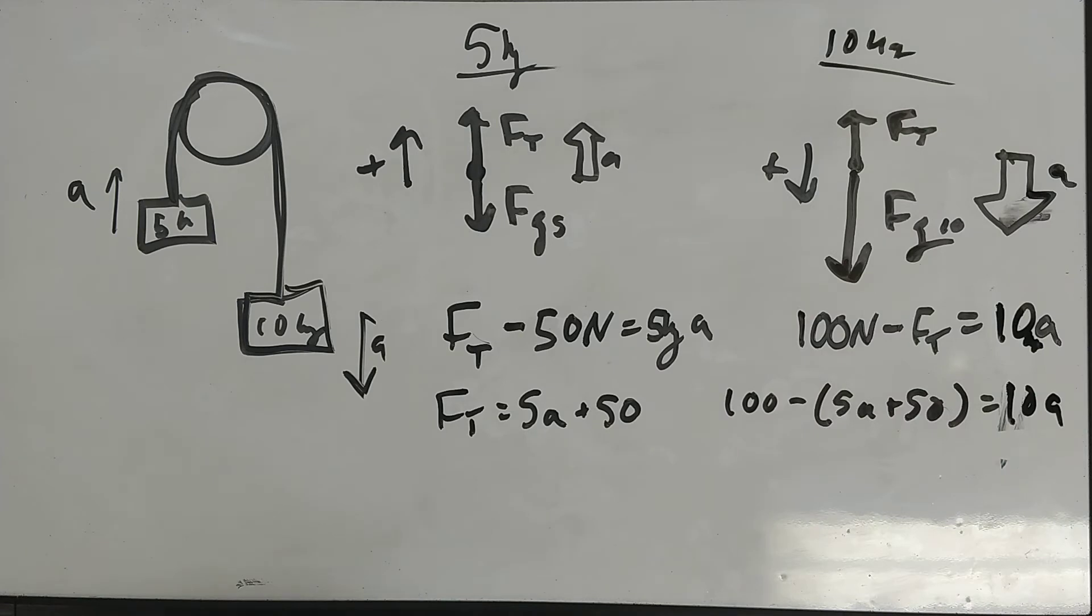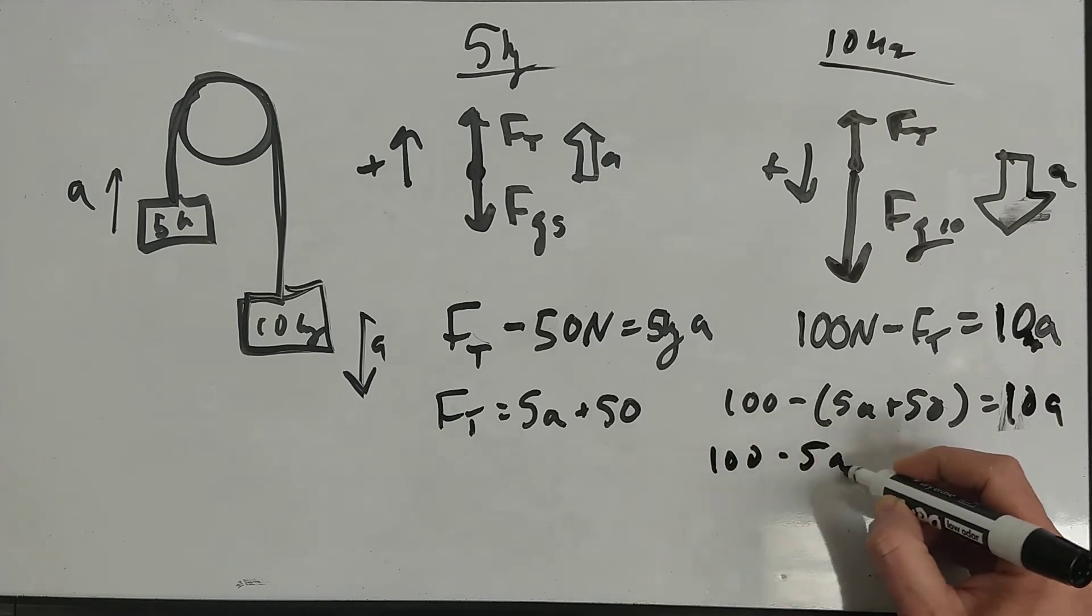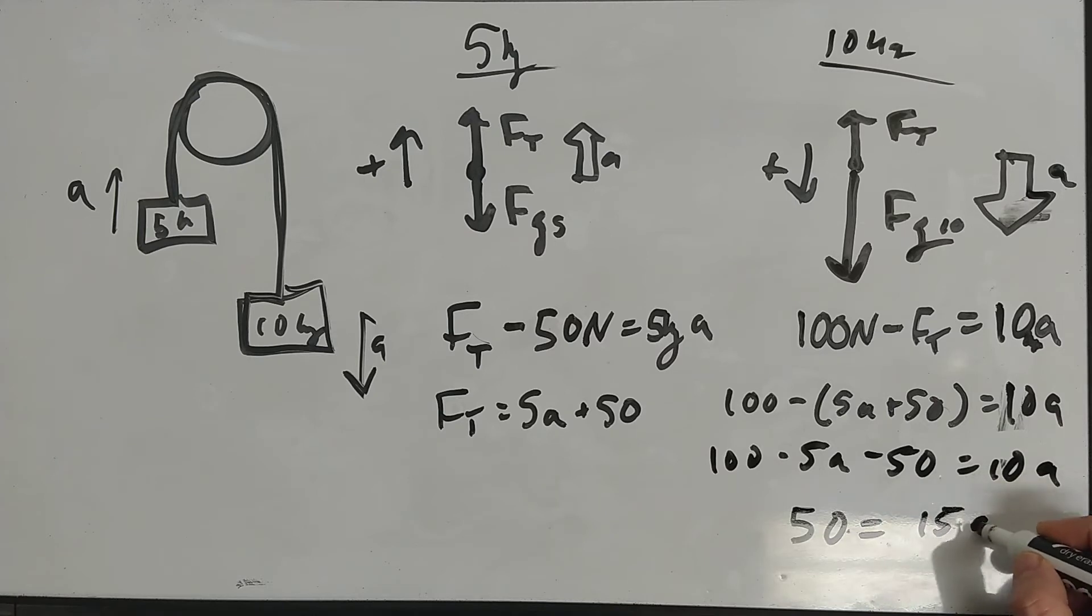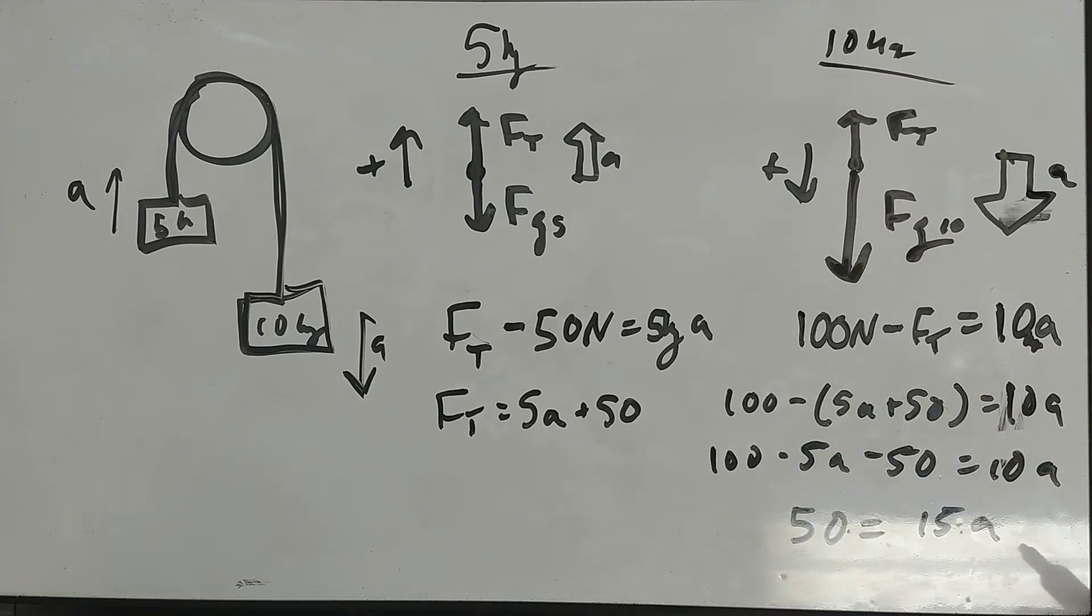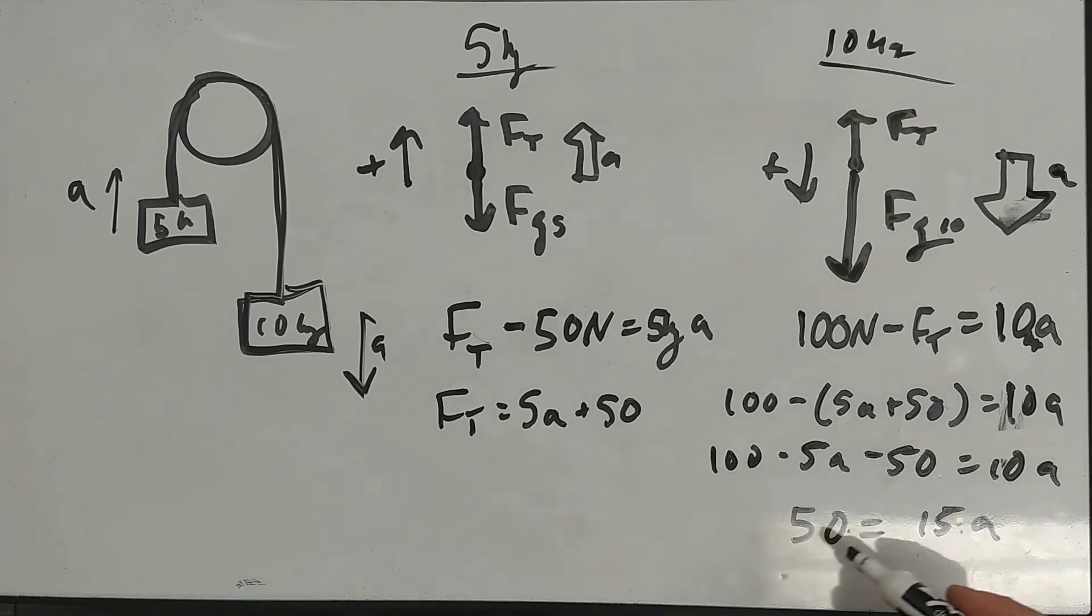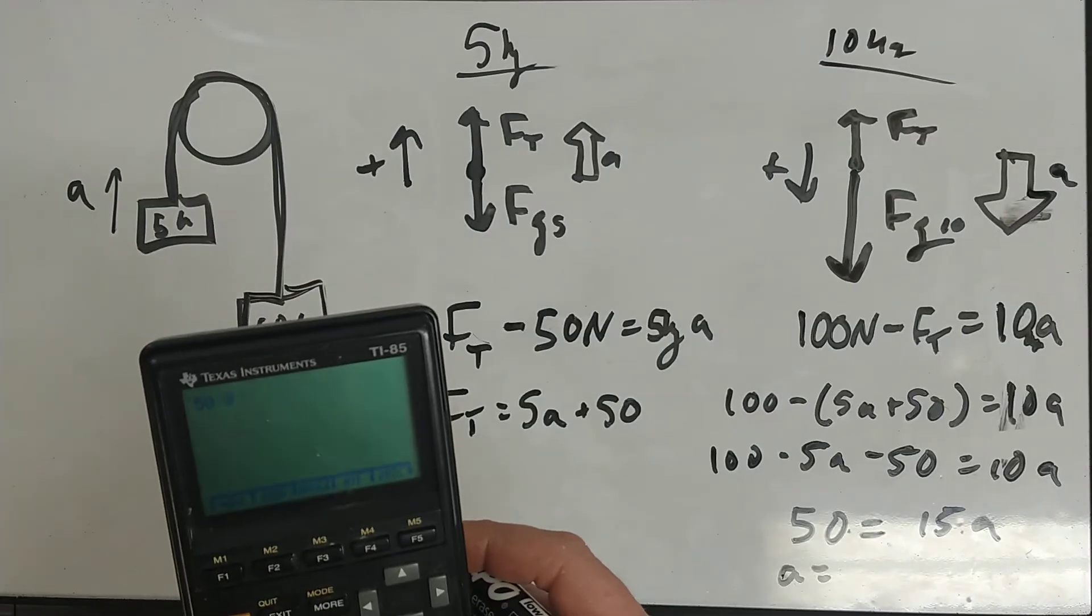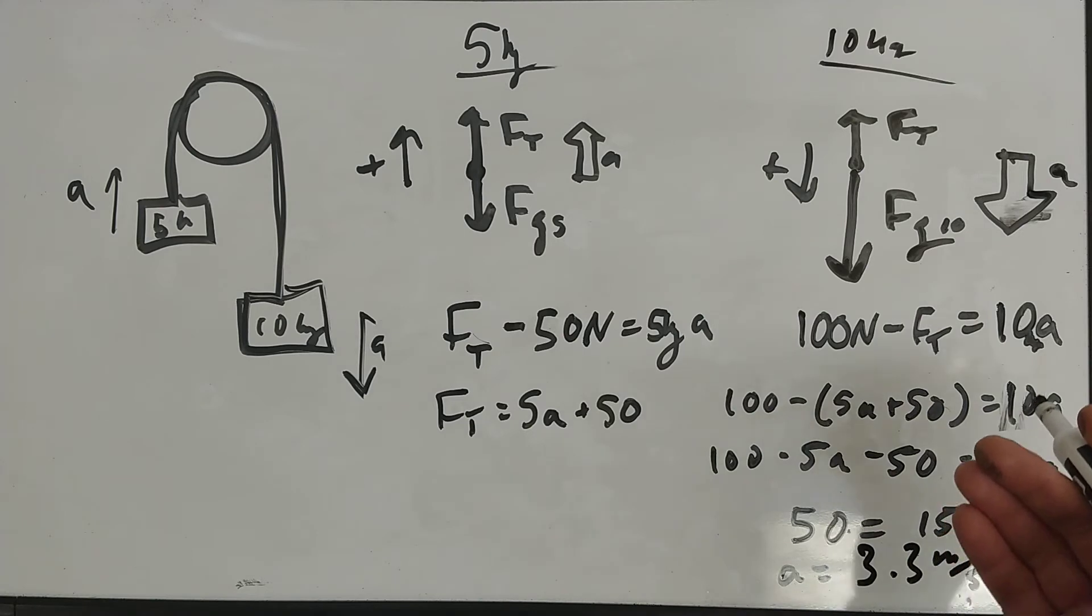So maybe some of you caught that when I wrote it, maybe some of you didn't. But anyhow, watch out for the negative sign there. So 100 minus 5A minus 50 equals 10A or 50 equals 15A. Bring that over here. Note that this is basically what you'd get from the blob method. And I'm in the glare zone, but it's not too bad this morning. I tried moving the whiteboard up a little bit closer to the wall to get away from the light.